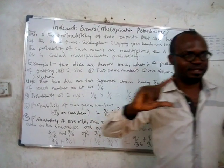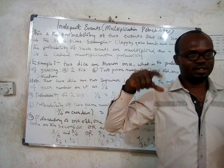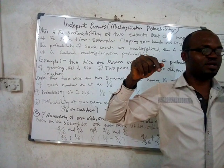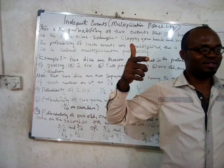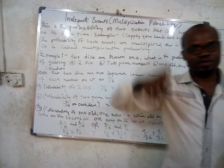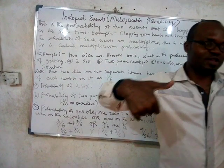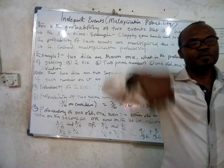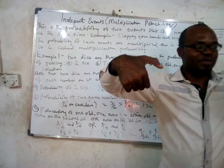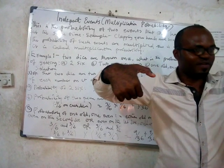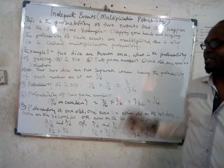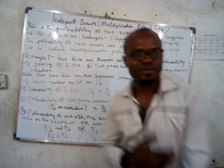If you throw two dice, each die has six faces. Is it possible to see a six on one die and also a six on the other? Yes, it's possible. So what is the probability of getting two sixes? It's going to be the probability of seeing a six on the first die, which is 1/6, multiplied by the probability of seeing a six on the second die, which is also 1/6. So we have 1/6 times 1/6, which gives us 1/36.